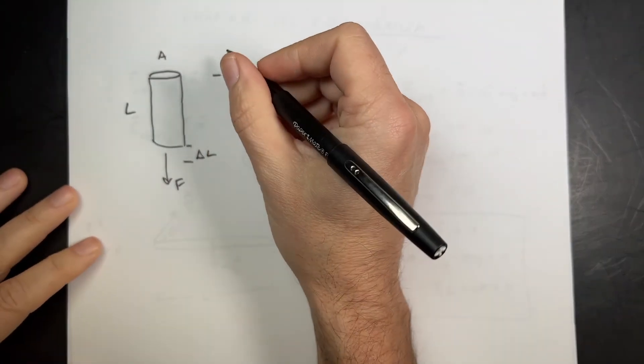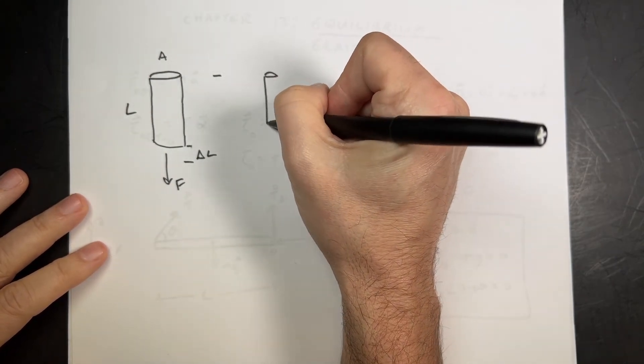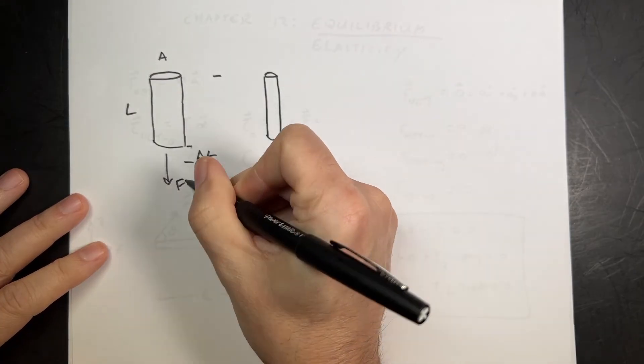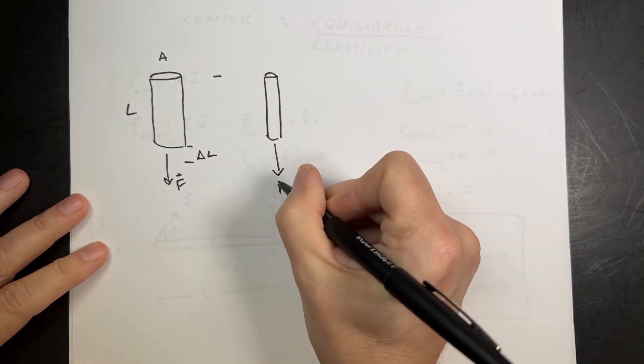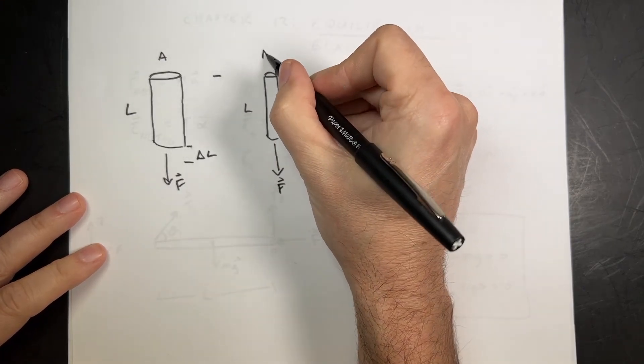Wires do act like a spring up to a certain point. Now, I take another wire that has the same length, and I apply the same force, I guess I'll write that as a vector, and it has the same length, but it has a smaller area. Let's say it's half the area, A over 2.